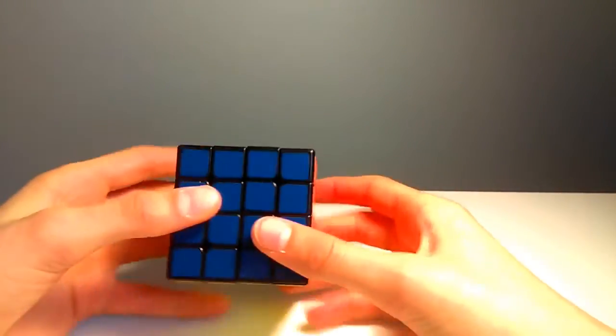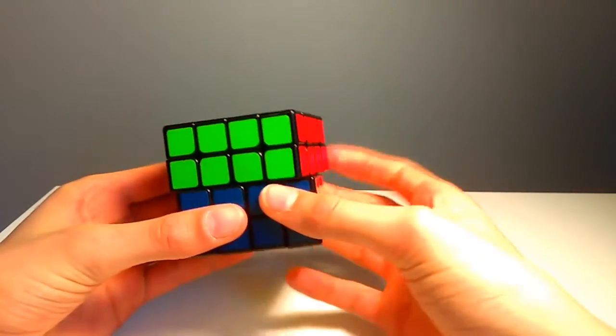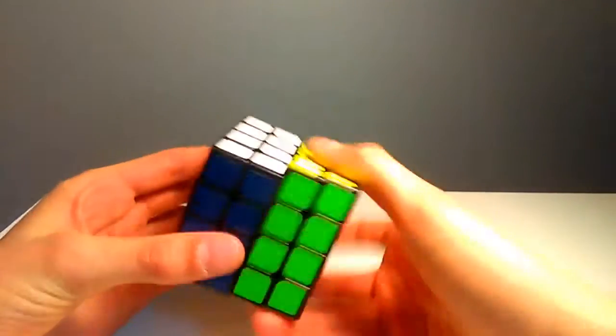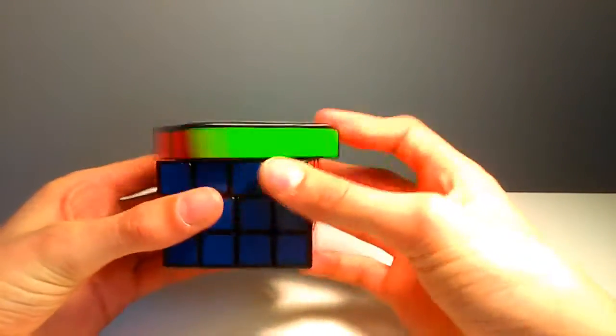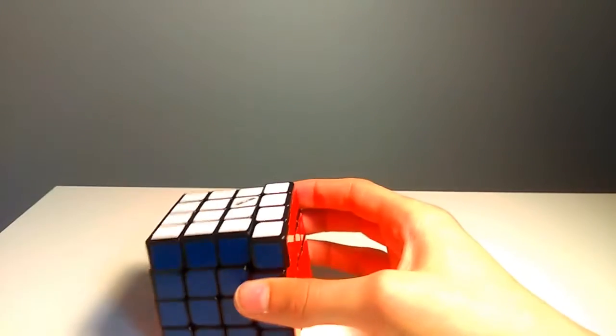This cube comes in at a price of around $22 on Amazon and $25 on thecubicle.us. And that is a very good price for a 4x4 of this high quality, because it has very good turning and very good corner cutting.